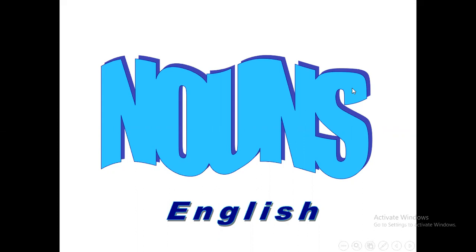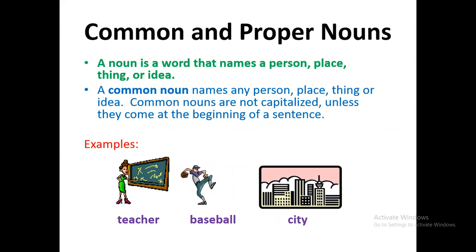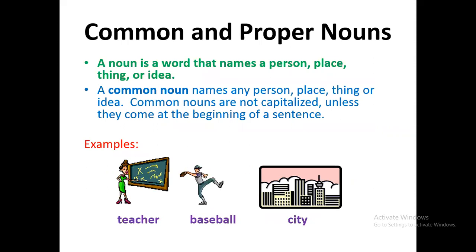Nouns are names for people, place, or thing. The common noun is the noun in general — a general noun. Like when we say a book, a door, a house, a hospital, a country — without saying its specific name.